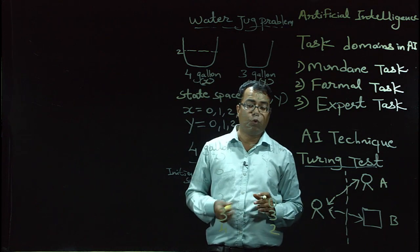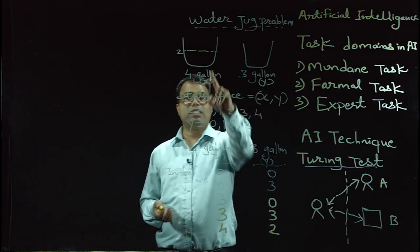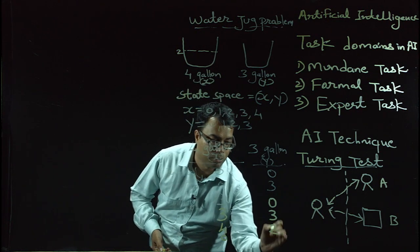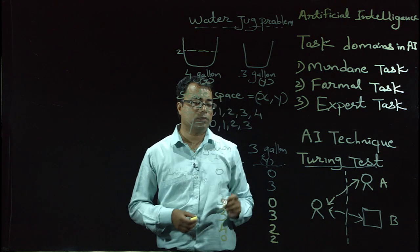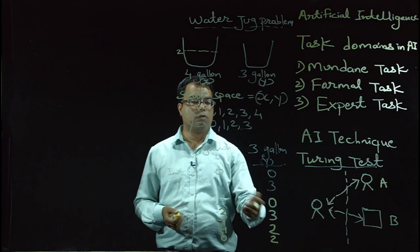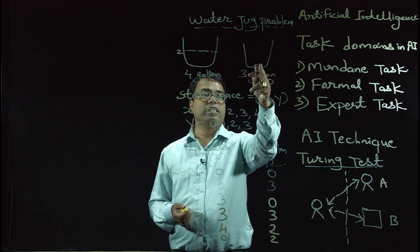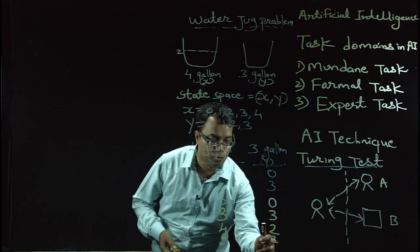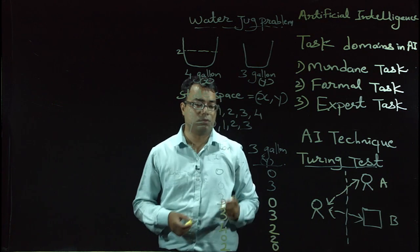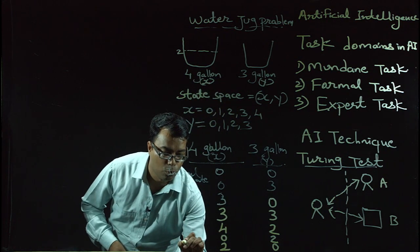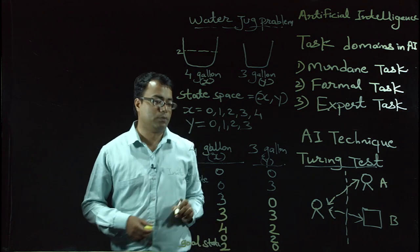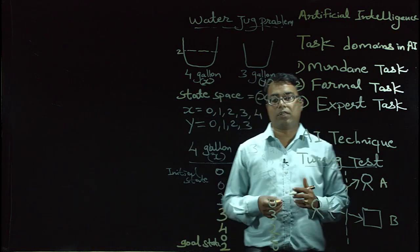Next, pour all the water present in the 3-gallon jug into the 4-gallon jug, giving state (2, 0). This is our goal state. So this is one solution for the water jug problem — this is the thinking of a human being.